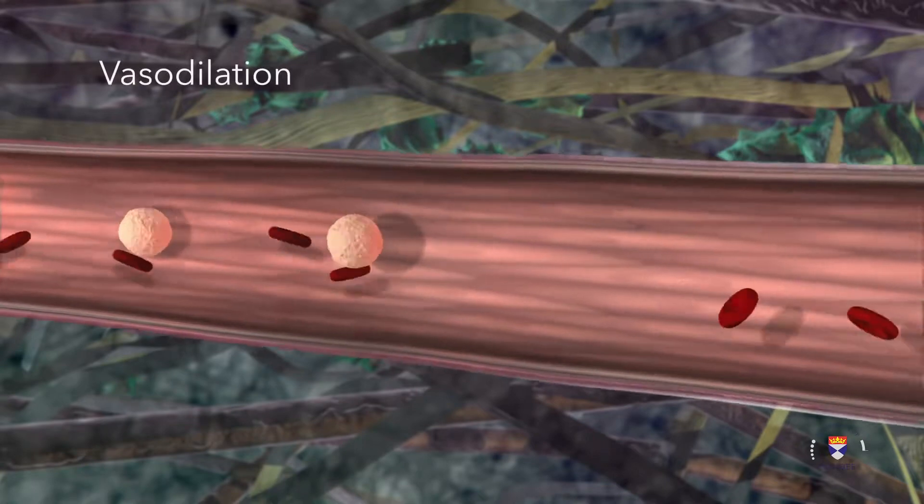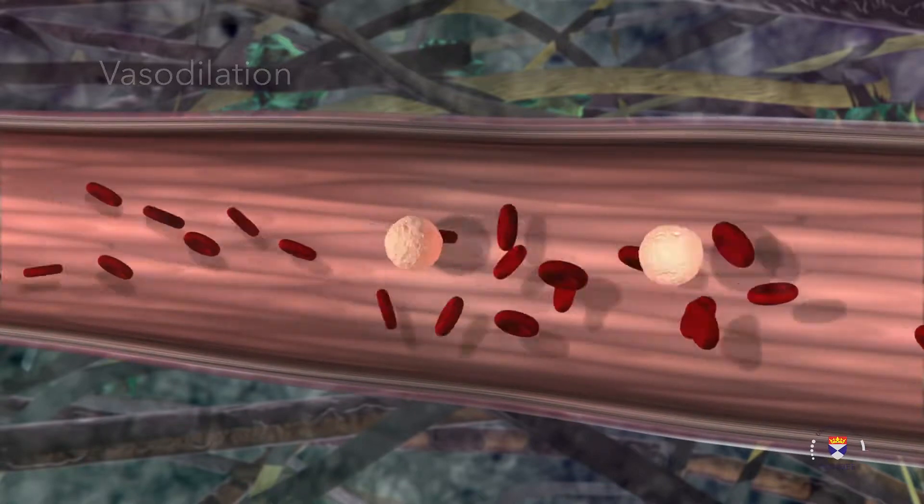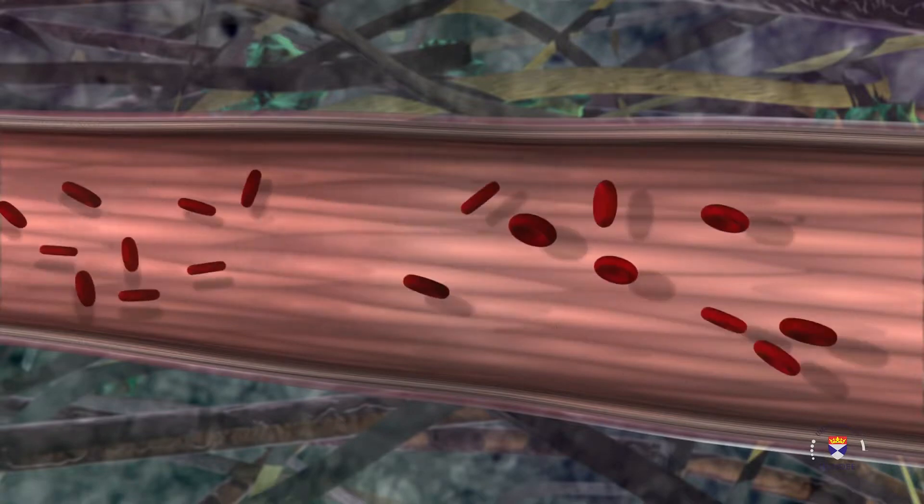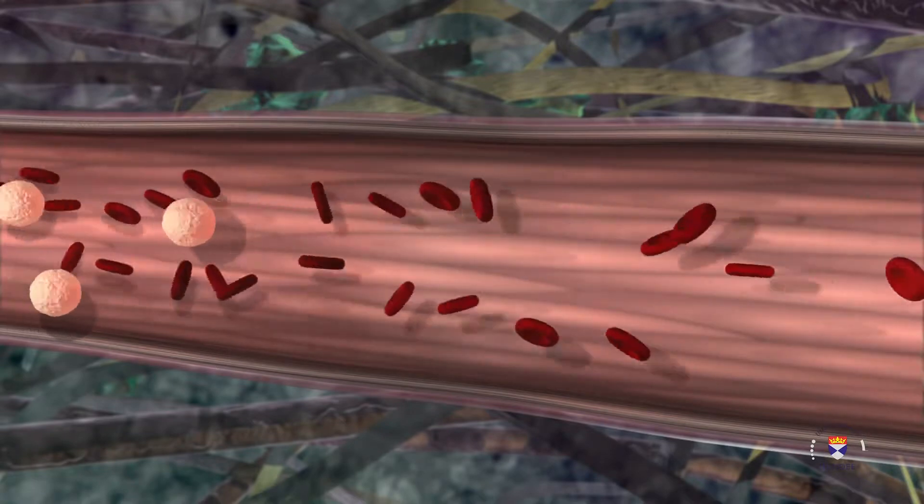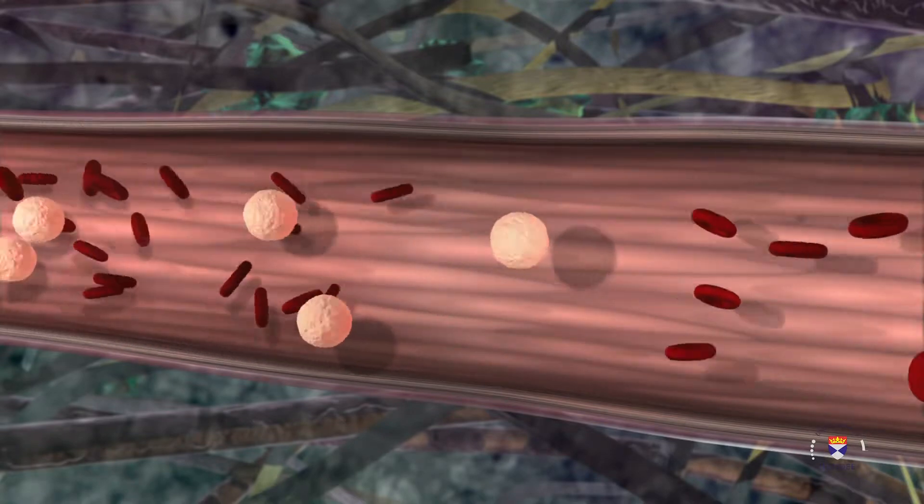Vasodilation, mediated by histamine and nitric oxide, starts in the arterioles and moves into the capillary beds close to the site of injury. This is responsible for the heat and redness seen in inflammation.